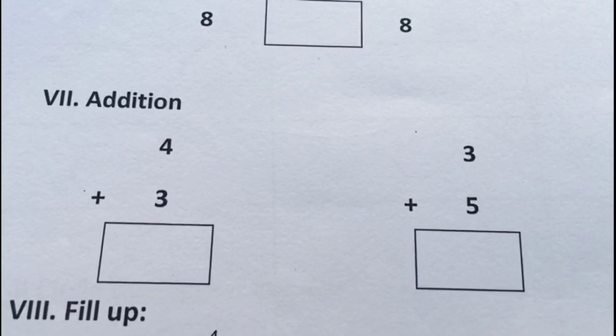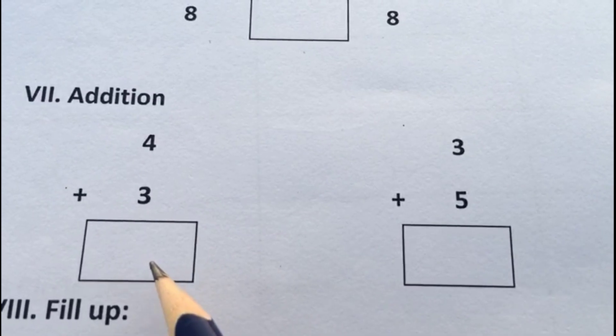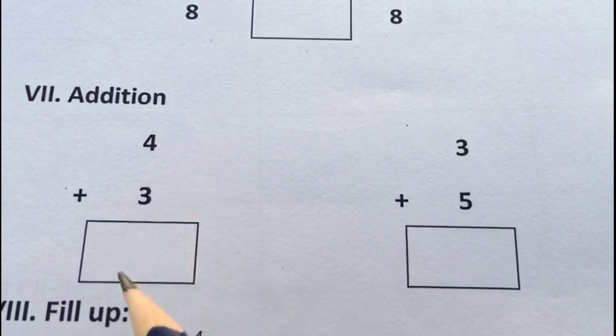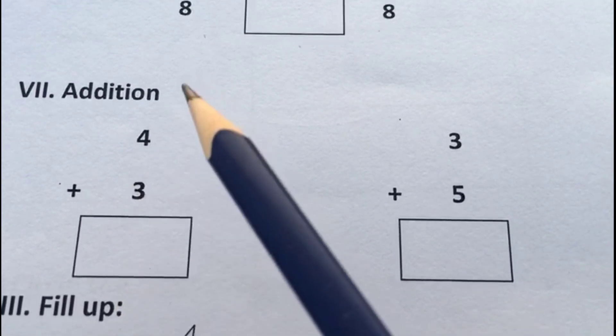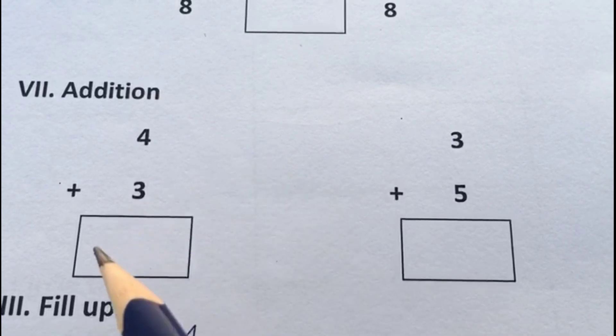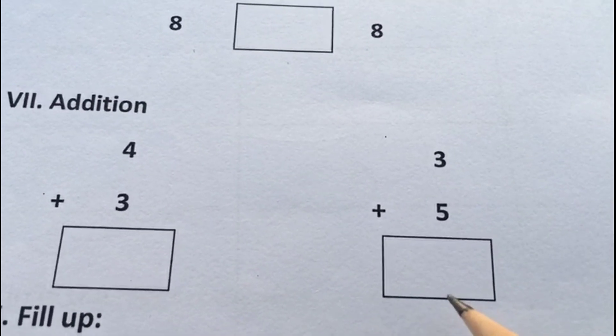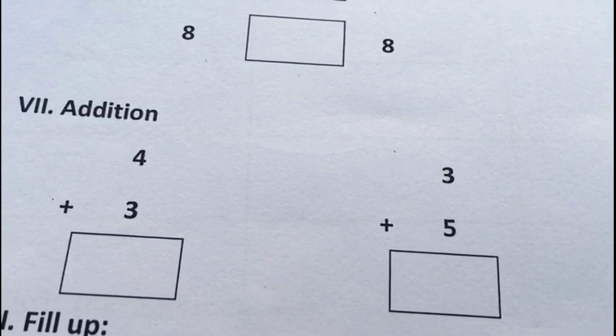The seventh question is addition. Here we are going to use only single-digit numbers for addition, since they are in UKG to first standard. We should use only single digits. The numbers are 4 plus 3 and 3 plus 5.